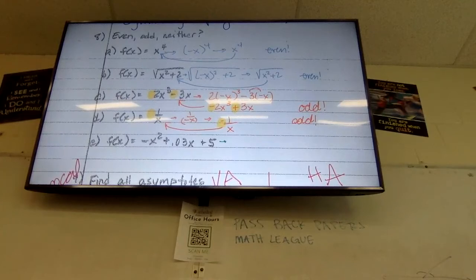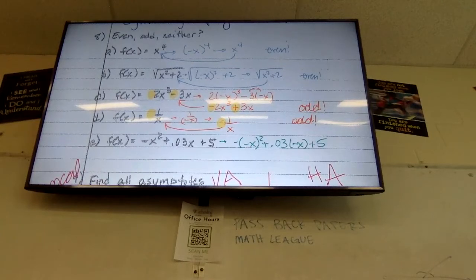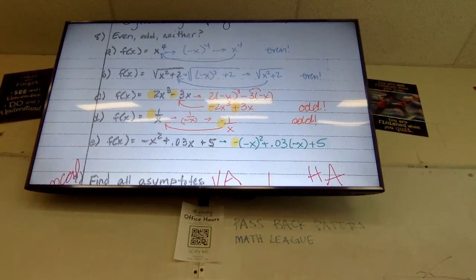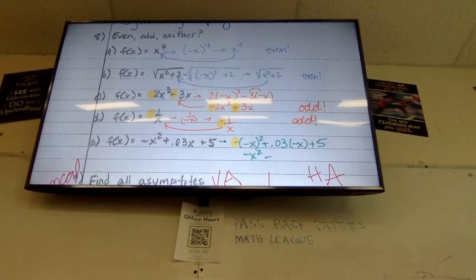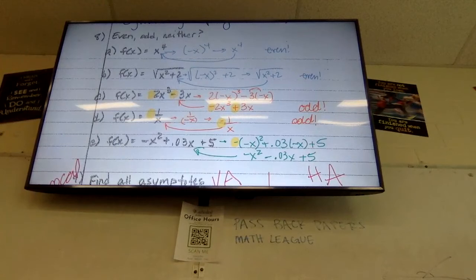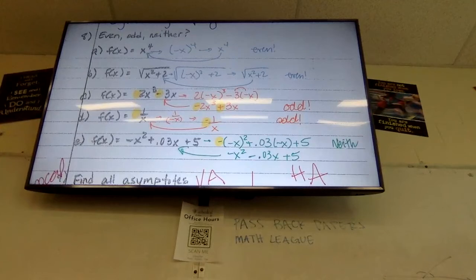Last one: I put negative x's in for everything — I've got negative, negative x squared plus 0.03 times negative x plus 5. Negative x squared becomes positive, but there's still a negative out front, so it's still negative x squared. And 0.03 times negative x gives minus 0.03x. The 5 doesn't change. Is this the exact same as what we started with? No. Is it the exact opposite? No — it's neither. Not everything is symmetric, and that's okay.